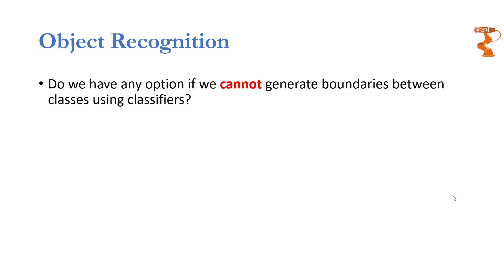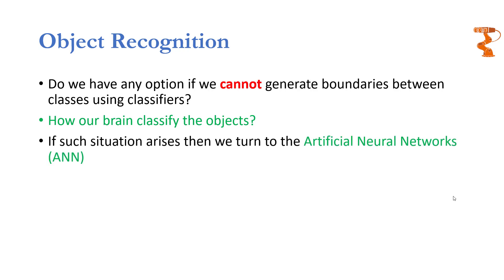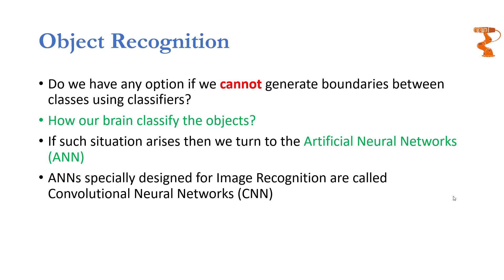But what if we cannot generate boundaries in feature space? Are there any techniques that work around the methodology of generating boundaries? The answers to these questions are not far away than our own selves. We can look for such techniques by learning how our brains classify all sorts of data, whether it is audio, visual, or any other sensory data. The biological neural network may be approximated by an artificial neural network, but exactly what model of ANN can best estimate the working of a biological neural network is still unknown. A variety of ANNs have been proposed, but a single ANN capable of performing above par in all kinds of application domains is still missing.